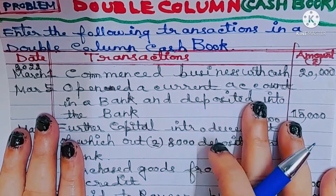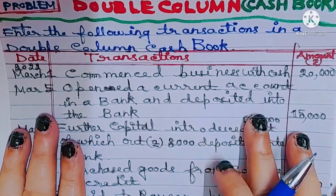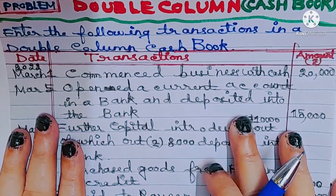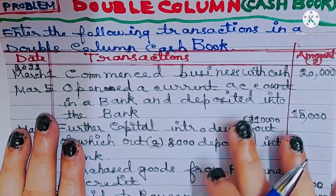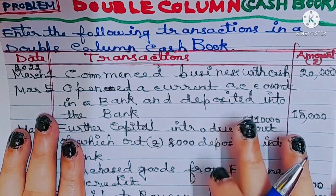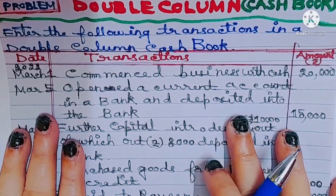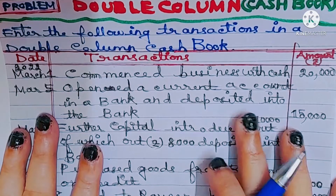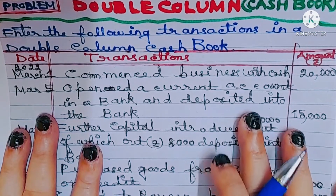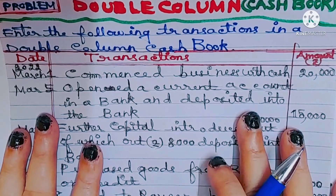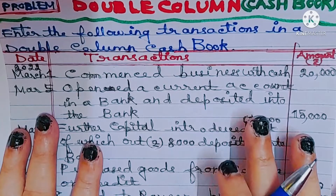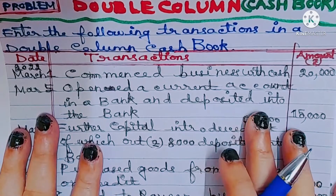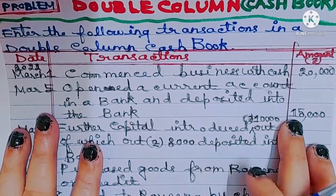This is a contra entry: bank account debit to cash account. We have to look at the position of both bank account and cash account. Since bank account is on the debit side, we record it accordingly. The amount is 15,000.